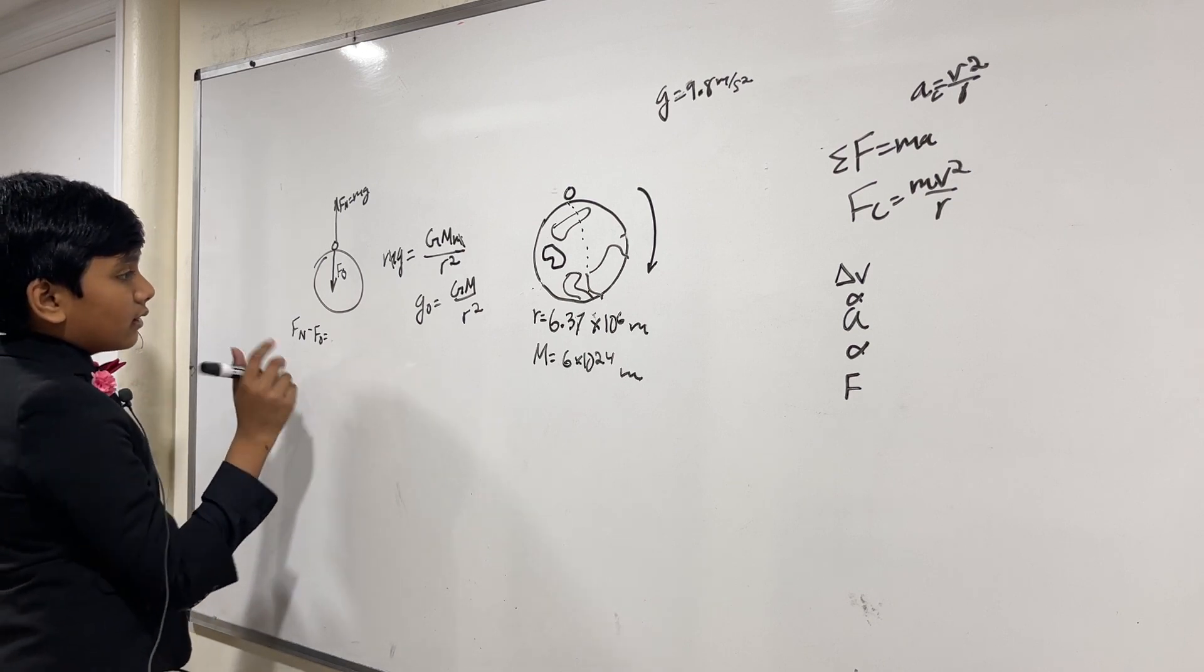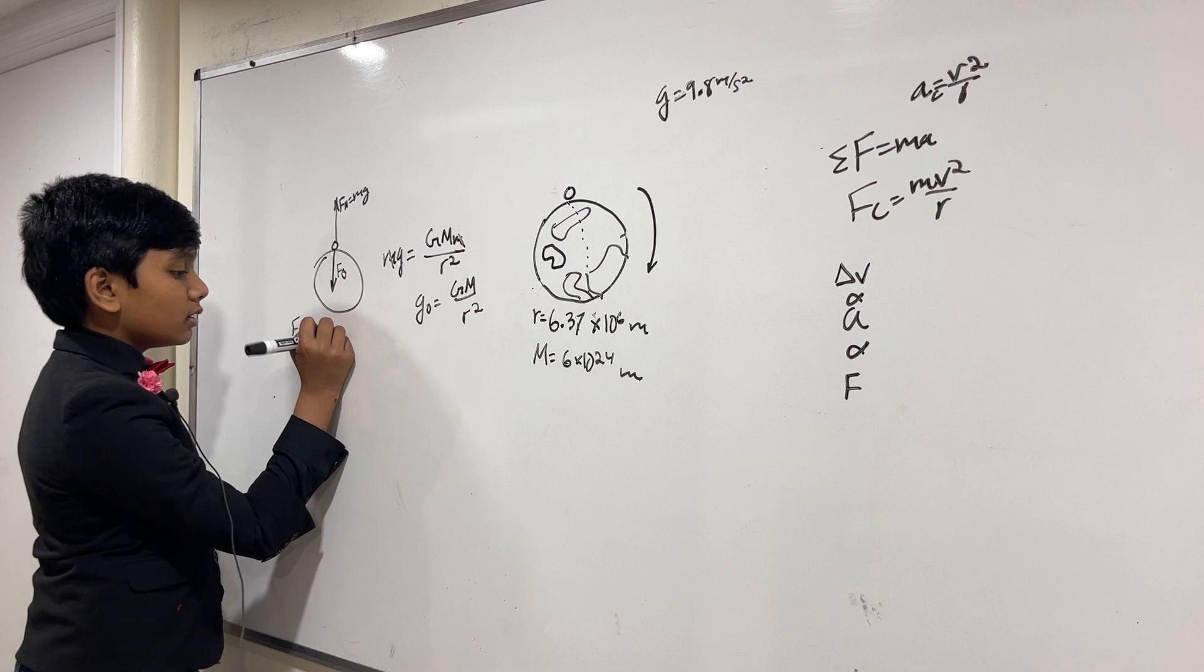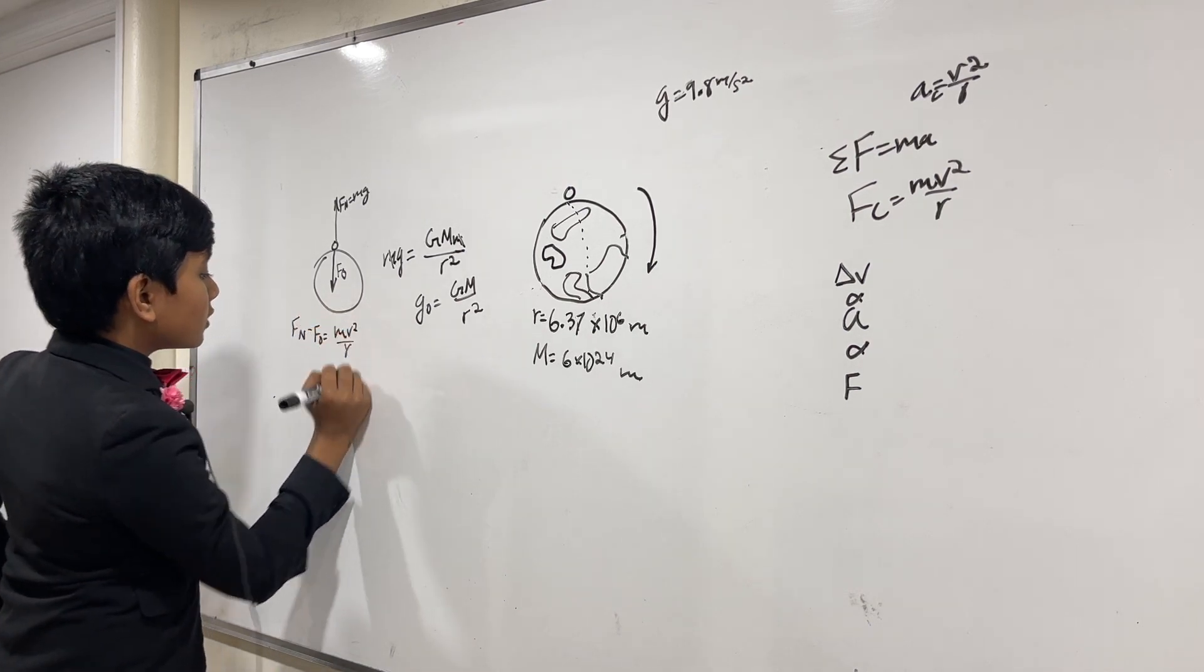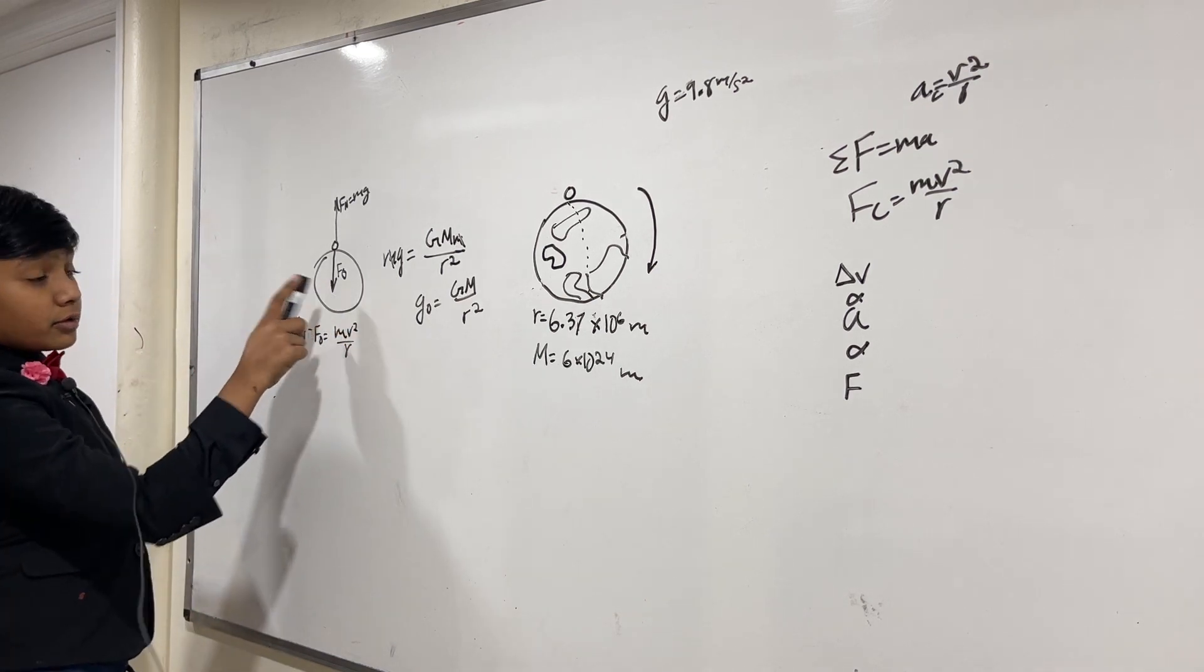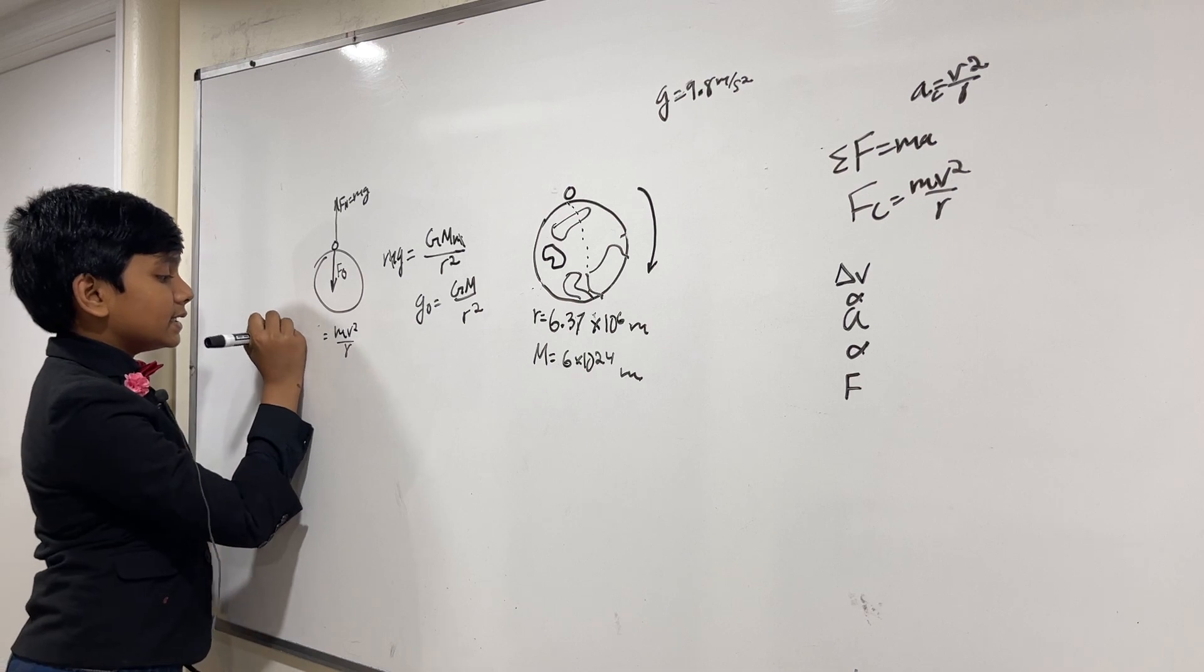and we're going to be using centripetal acceleration over here. So, M, A, C, or M V squared over R, because this is going towards the center of the earth. So, this is our net force. Rather, this is our net force.